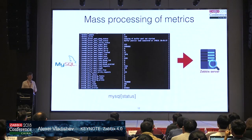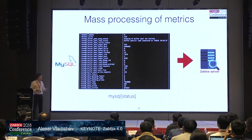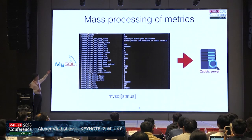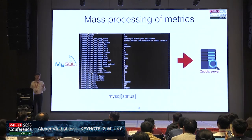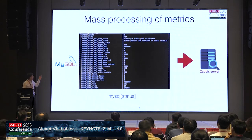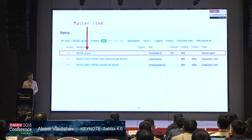Another question: suppose we have lots of information — maybe a big XML, big JSON, or in this case the output of MySQL extended status — and we have many different metrics. How do we use this information effectively and efficiently in Zabbix? How do we split that data into separate metrics? We introduced an interesting feature called dependent items.